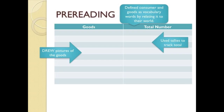She related consumers and goods to students' own world by talking about trips to the grocery store. Then she and the students drew a T-chart. Students had a T-chart where they put goods on one side — drawing pictures of the goods the grandmother purchased — and on the other side recorded the total number of each good using tally marks.